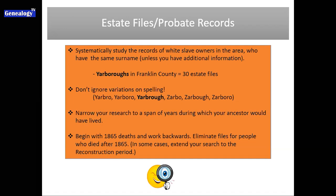Now we're going to talk about estate files and probate records, because this is again where you're going to find a lot of meat with regard to formerly enslaved ancestors. Remember, you are researching the records of the slave owner, because our enslaved ancestors were property. And where do you find information about any property? You find that information under the name of the person who owns it. So we look at estate files and probate records, and as we do that, we want to systematically study these records of anyone in the area who has the same surname as your enslaved ancestor.